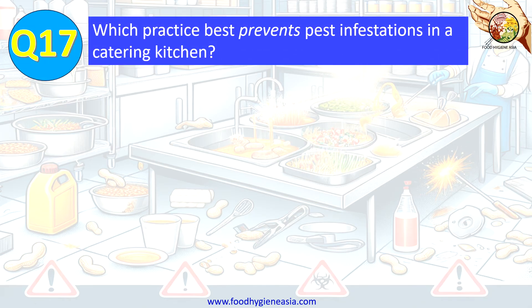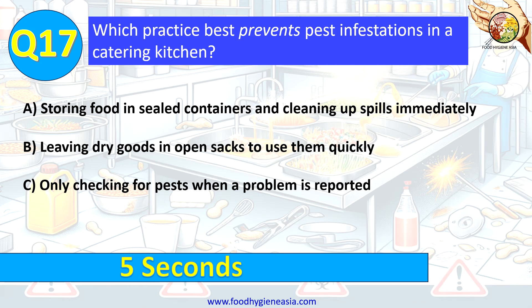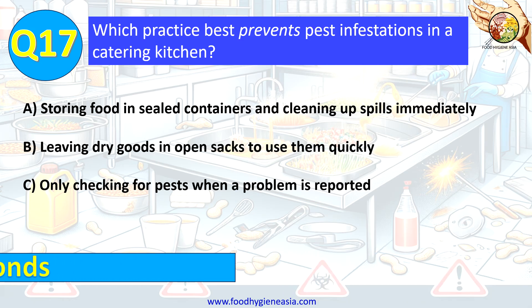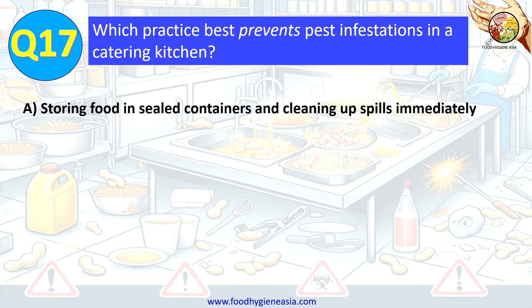Question 17. Which practice best prevents pest infestations in a catering kitchen? A. Storing food in sealed containers and cleaning up spills immediately. B. Leaving dry goods in open sacks to use them quickly. C. Only checking for pests when a problem is reported. The correct answer is A. Storing food in sealed containers and cleaning up spills immediately.